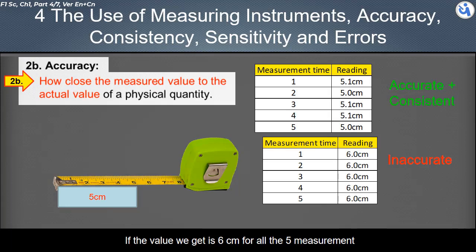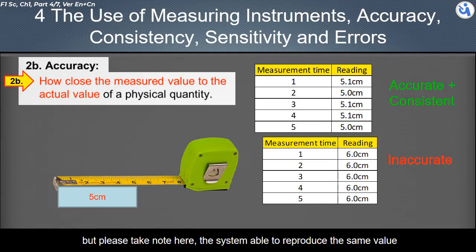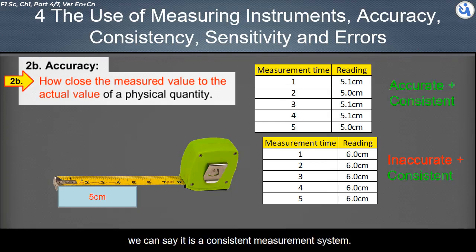If the value we get is 6 cm for all the 5 measurement, it will be inaccurate. But please take note here, the system able to reproduce the same value. We can say it is a consistent measurement system.